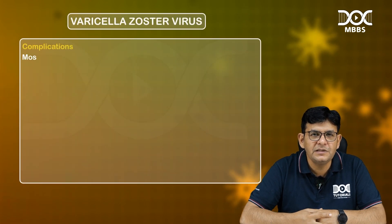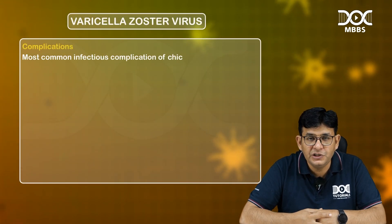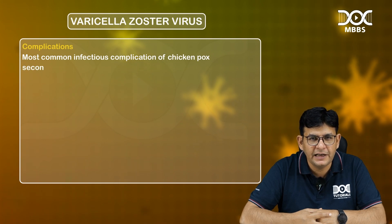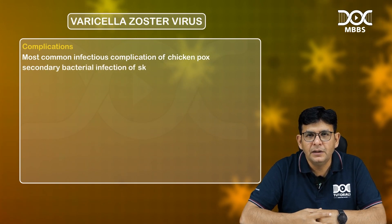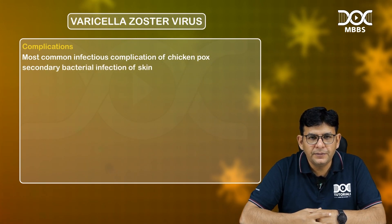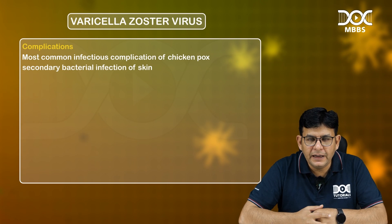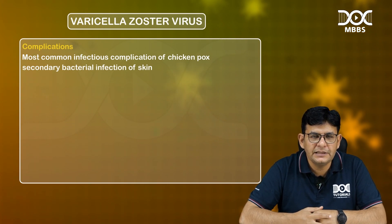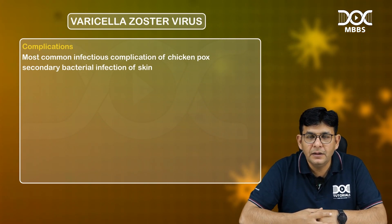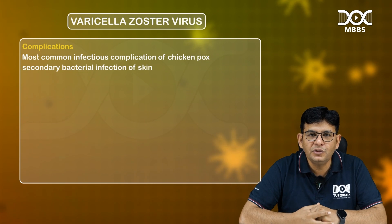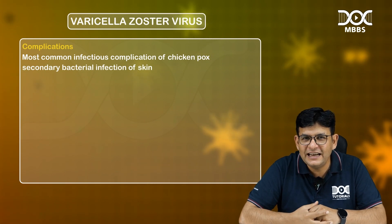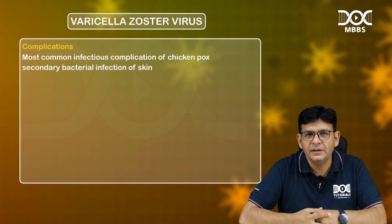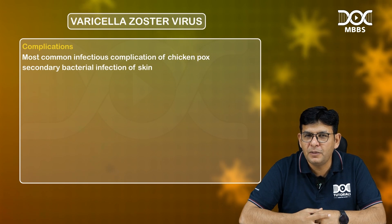The most common infectious complication of chickenpox is secondary bacterial pneumonia. Secondary bacterial infections of the skin are also mentioned in some sources, so to be safe in the exam, write secondary bacterial infections as the most common complication.